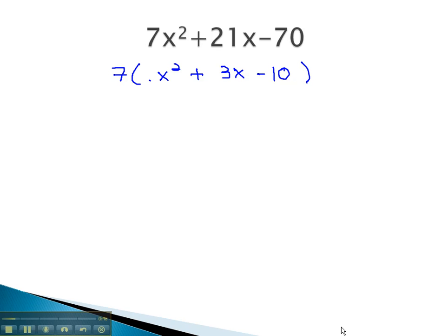Now that the GCF is out of there, we notice there is a 1 as a coefficient in front of the x squared. This is nice because it makes the factoring much quicker.